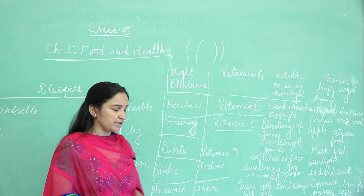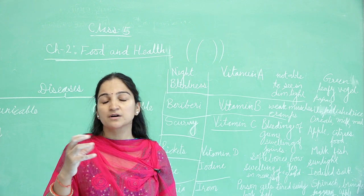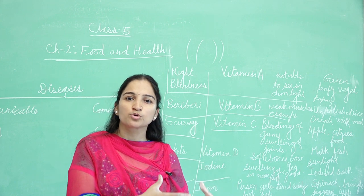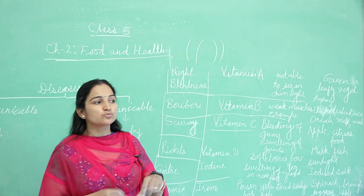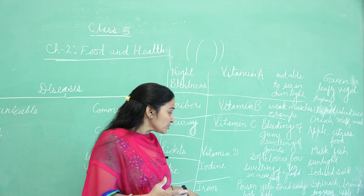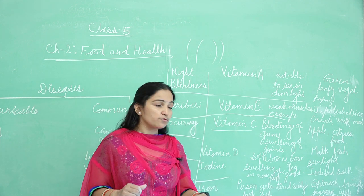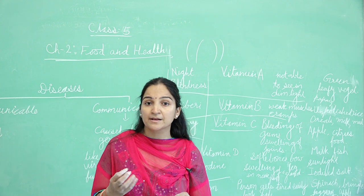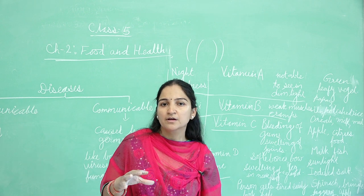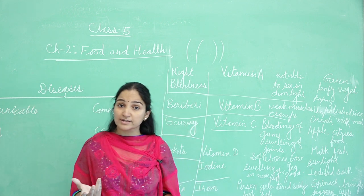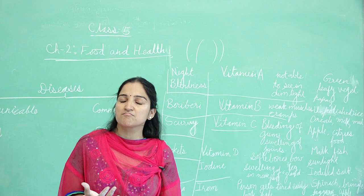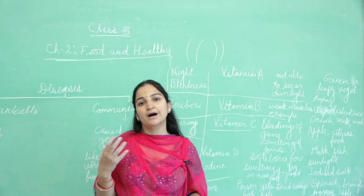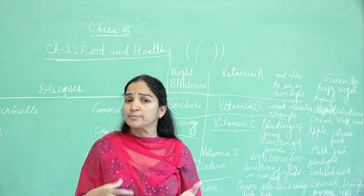Our last disease is anemia. The symptoms of anemia are that the person gets tired very quickly — even a little work or play and they become fatigued. Another symptom is a pale, yellowish appearance of the face. To treat anemia, eat iron-rich foods such as spinach, brinjal, jaggery, milk, guava, meat, and other iron-enriched fruits and vegetables.